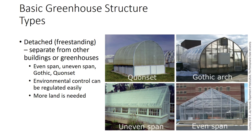Detached greenhouses come in four different styles: even-span, uneven-span, gothic, and quonset. The most common type of detached greenhouse is the detached even-span, which has a symmetrical roof with slopes having an equal pitch and width.